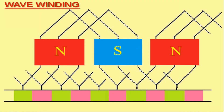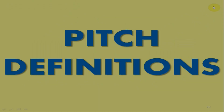On the other hand, in simple wave winding, one may notice that the end of one coil is connected to the beginning of another coil, but the two ends of each coil are connected to commutator segments separated by a definite distance. Moreover, in wave winding, the coil ends are bent outwards, and because of the wavy appearance of the coils, the name of this winding is wave winding.